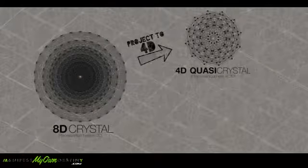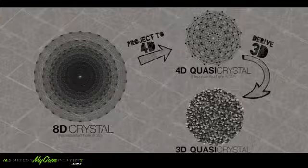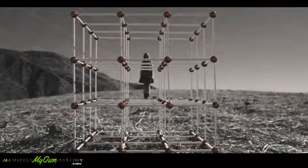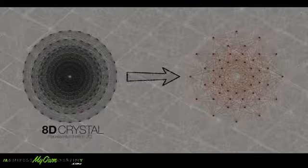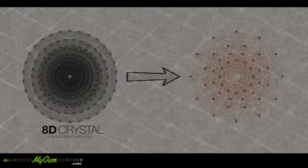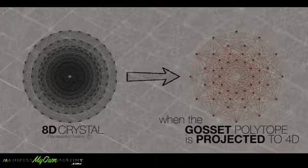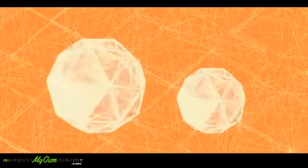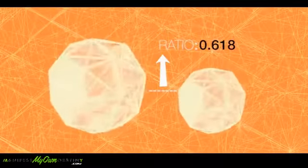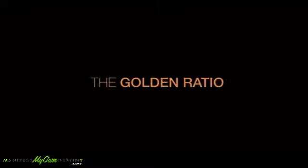To generate that 3D quasi-crystal — the substructure of the pixelated fabric of reality — we project this 8D crystal to 4D, and then convert that to 3D. Just like the basic cell shape of the 3D cubic lattice is the cube, the cell shape of the E8 lattice is an 8D shape with 240 vertices, called the Gossett polytope. When the Gossett polytope is projected to 4D, it becomes two identical shapes of different sizes.